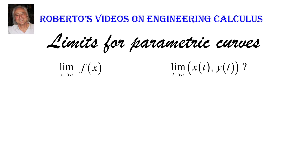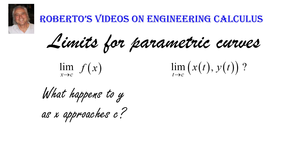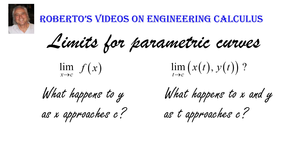Let's go back to what we meant for the regular function. The limit as x approaches c of f of x means we're asking what happens to y as x approaches c. Similarly, in a parametric curve, we're looking at the two coordinates separately. So in a limit situation, we're asking what happens to x and y separately as t approaches c. That simply means we're going to compute the limit as t approaches c of x(t) and of y(t) separately. Once we have this understanding, it basically reduces to finding two separate limits, and we can apply all the techniques we've seen so far. Let's go through some examples.